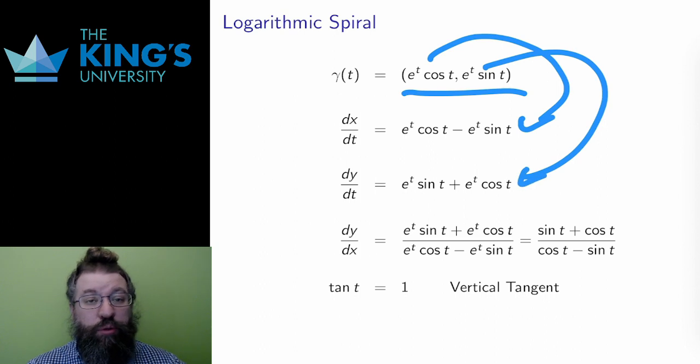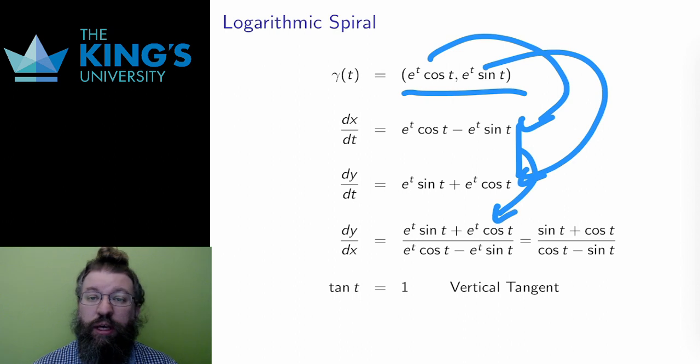I can differentiate each of the coordinates in the variable t. Both are product rule derivatives. Then I take the ratio of these, y-derivative over x-derivative. I can factor out the exponential to produce this expression for the slope.